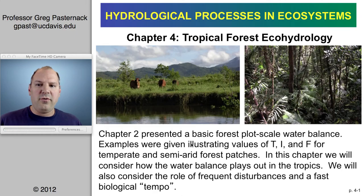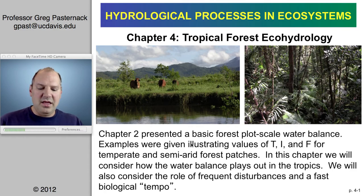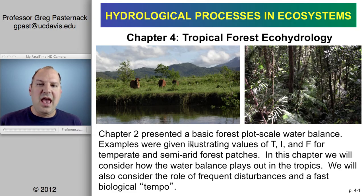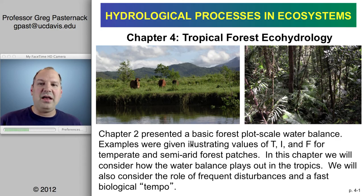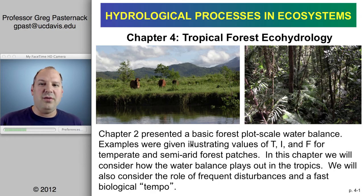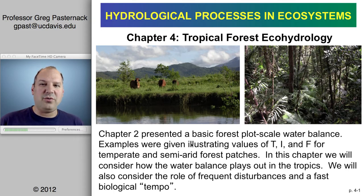This is Chapter 4 for the class Hydrological Processes and Ecosystems, and the topic is Tropical Forest Eco-Hydrology. Back in Chapter 2, I presented a basic forest plot-scale water balance and showed how you could assess through-fall, interception, and stem flow as the three primary water fluxes, along with a storage component on the tree, giving us the water fluxes and water storage for the hydrological water balance.